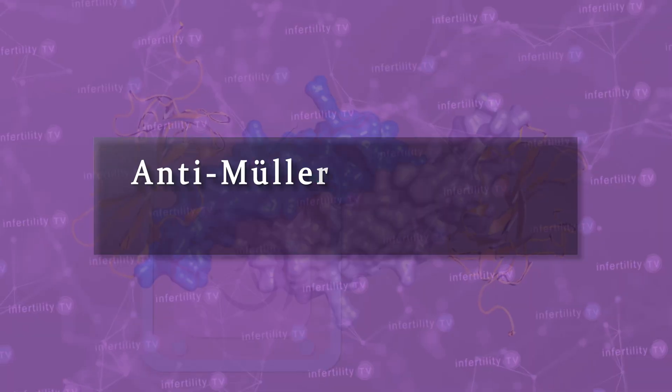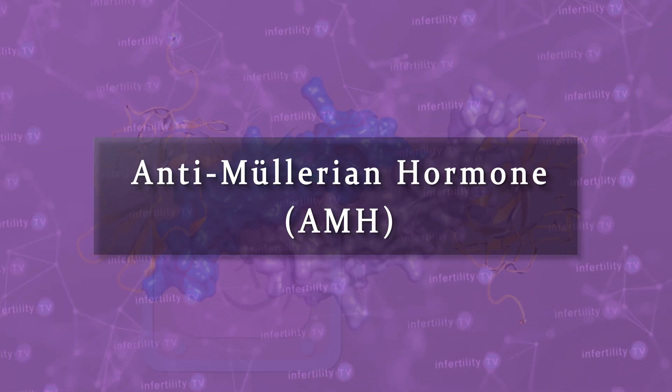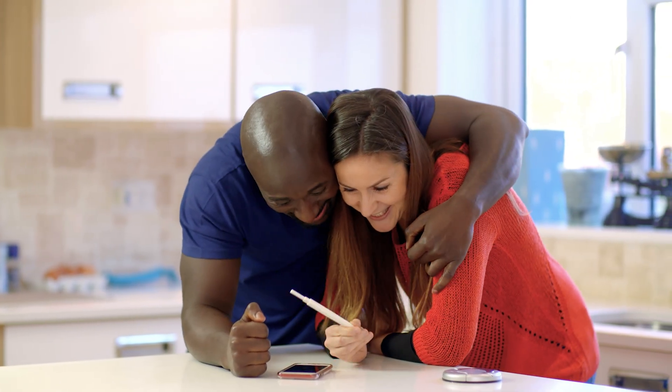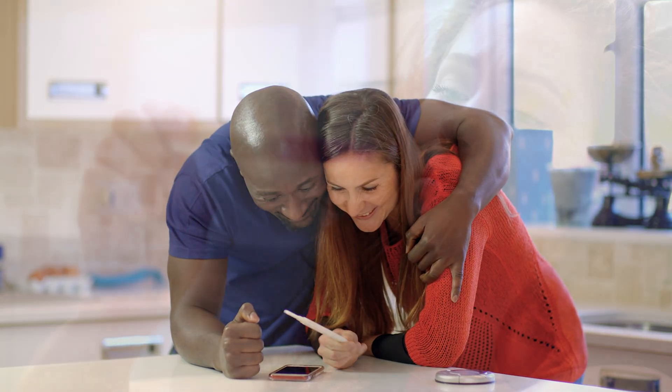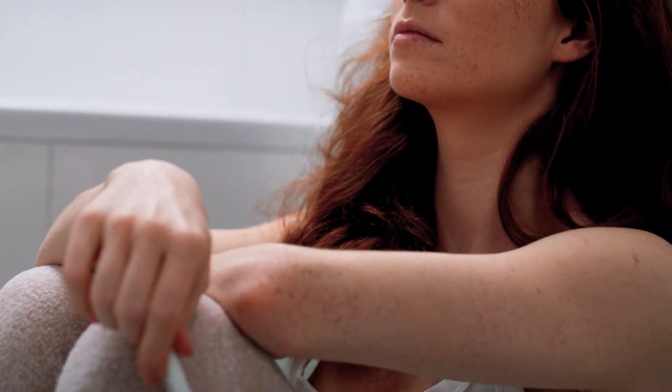For several years, fertility doctors have been studying a hormone produced in the ovaries called Anti-Mullerian Hormone, or AMH. AMH is a really useful hormone to measure in women who are trying to become pregnant or are having difficulty becoming pregnant.